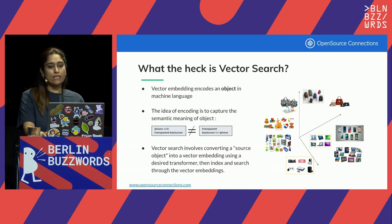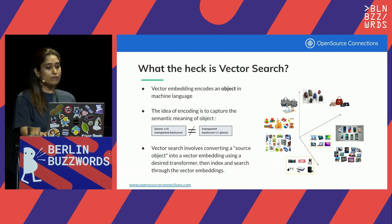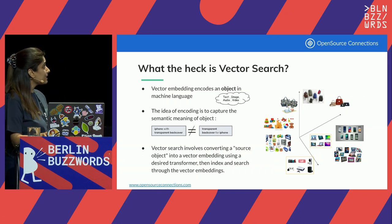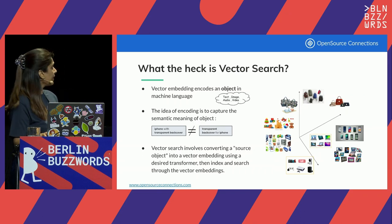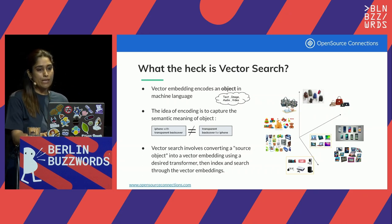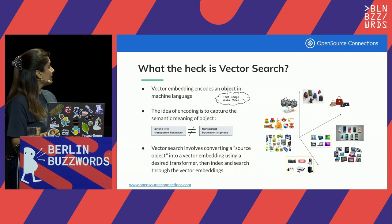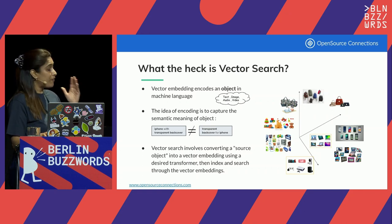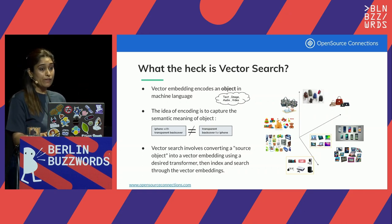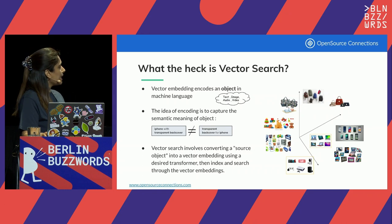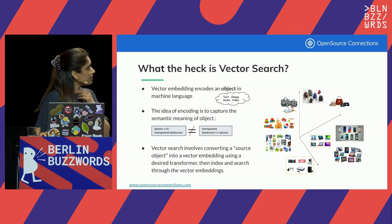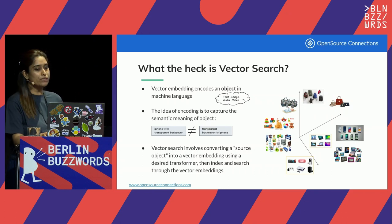A vector is basically a machine language representation of a given object — an object that could be text, image, audio, or video. Vector search uses transformer models that have capabilities to understand the semantic meaning beyond what keywords could express. For example, knowing that 'iPhone with transparent back cover' is very different from 'transparent back cover for iPhone,' even though the keywords remain the same in both phrases. Objects with similar attributes and characteristics are closer to each other, which takes search relevance to a whole new level.